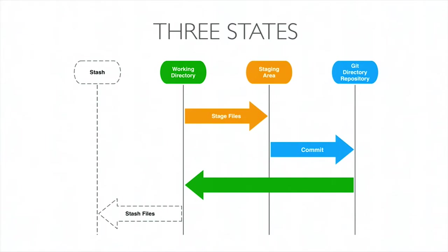In your working tree you'll have your files. When you change a file it will show up in the working tree. Once you're ready to record that change to the Git repository, you move that file into the staging area — the pre-commit area — saying, here's a change I would like to record. Once it's in the staging area you can commit that change into the history, which is just a log file. Once you've done that, your working tree returns back to blank — not blank as in no files, but blank as in no changes to those files.